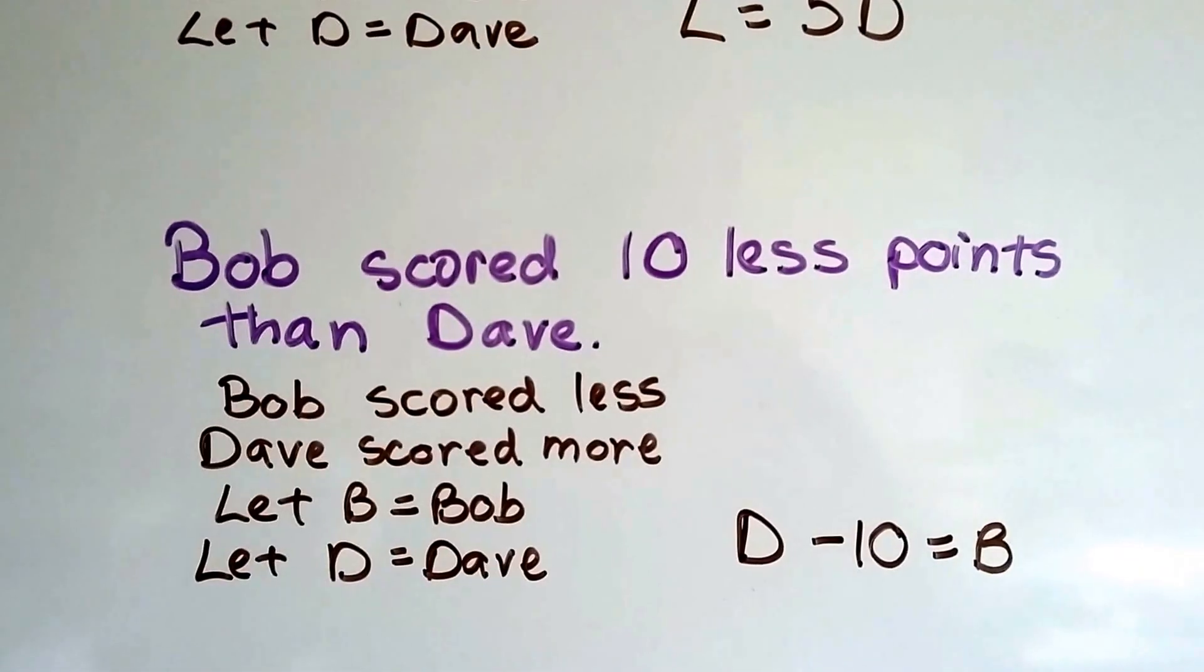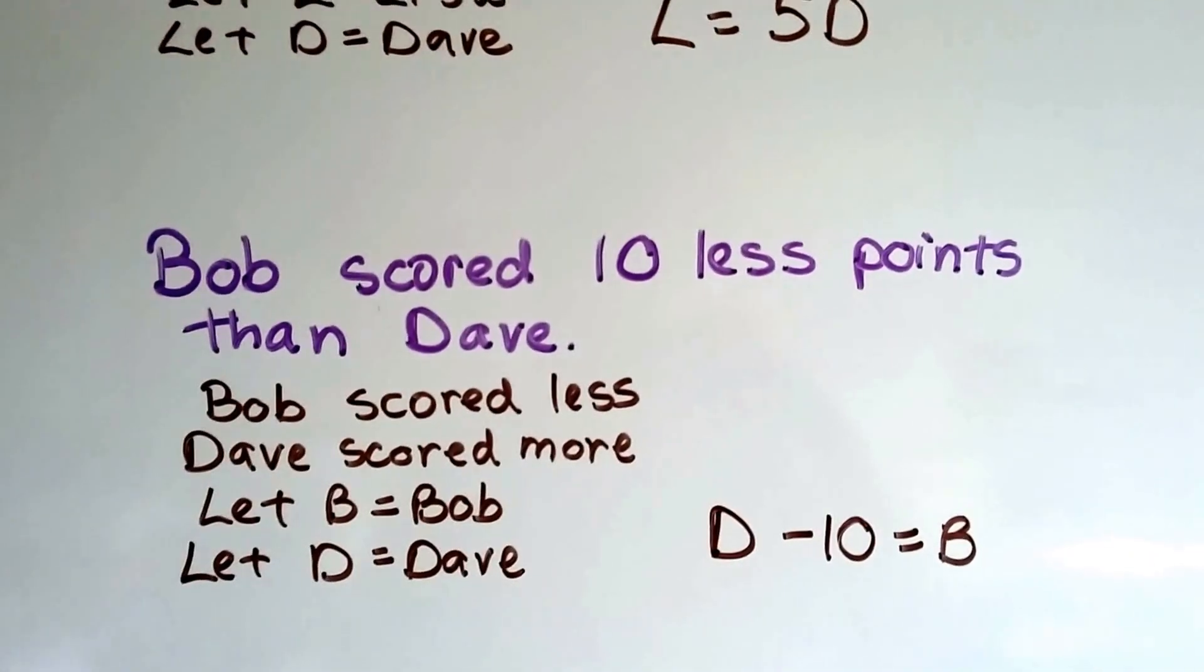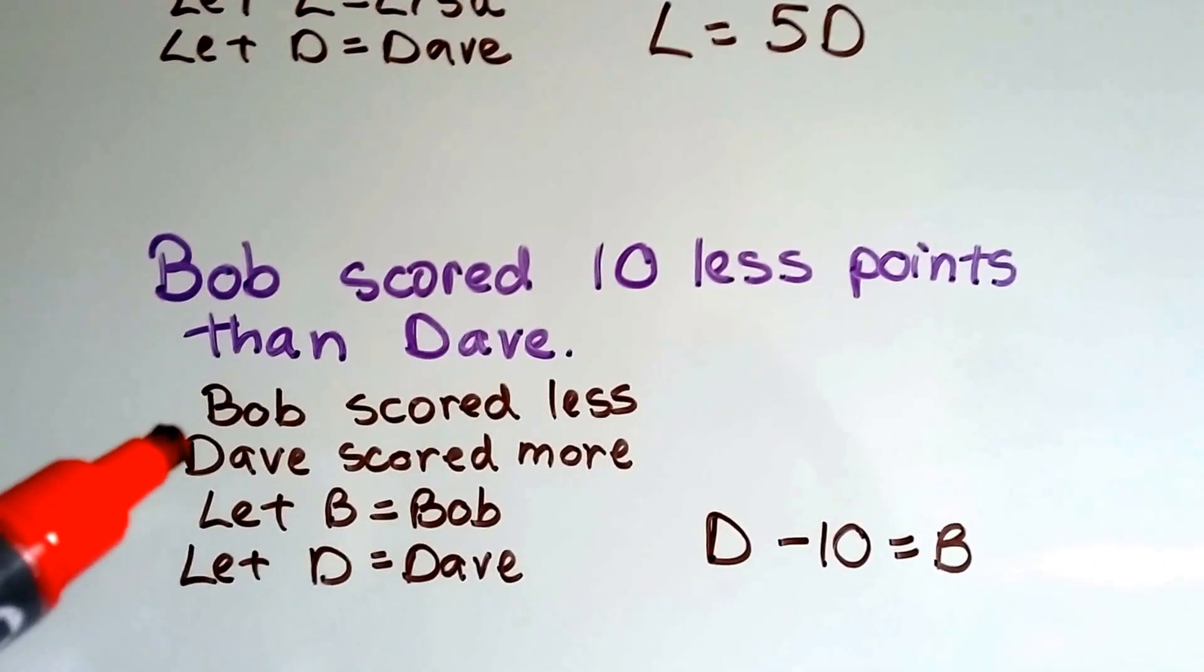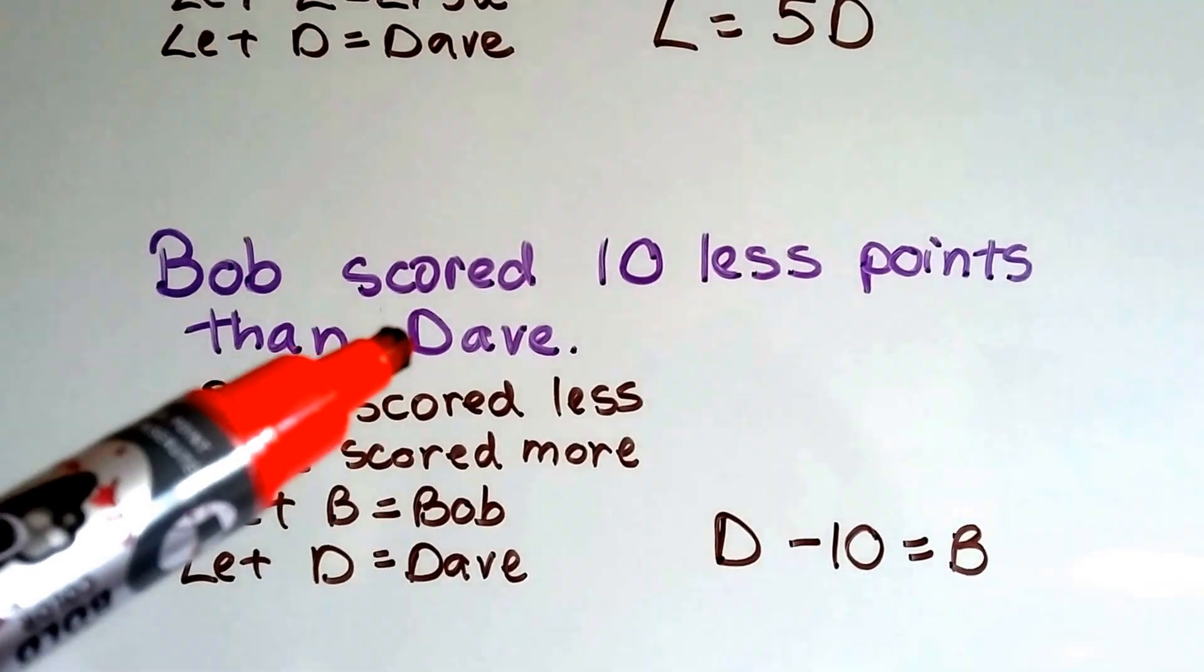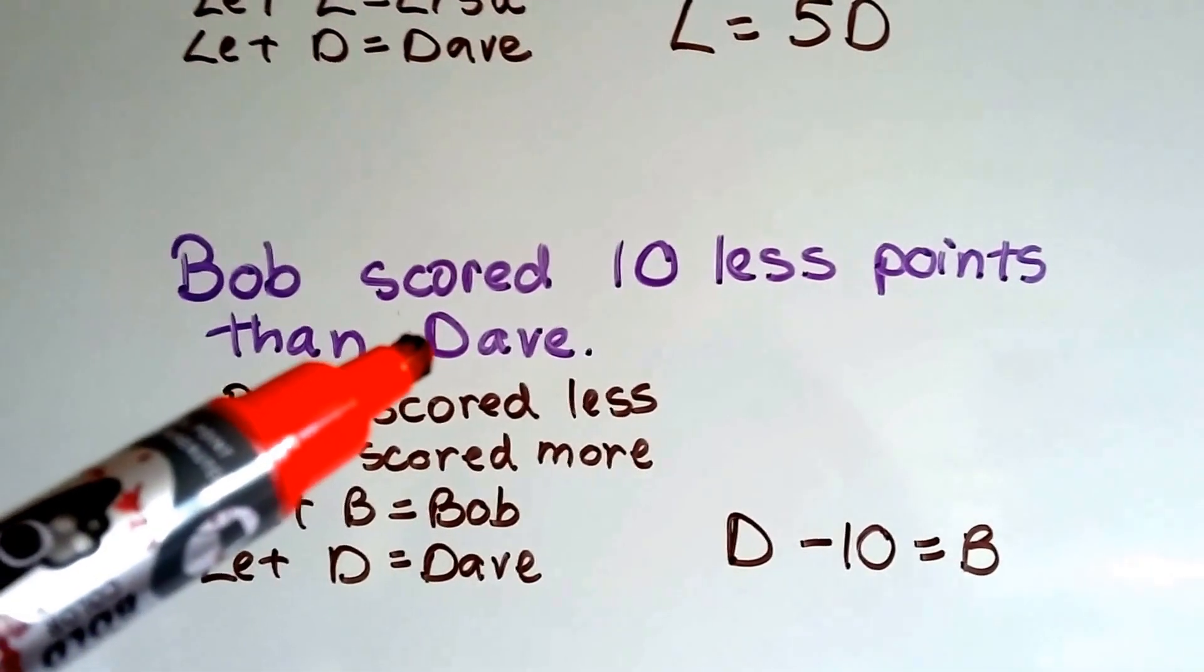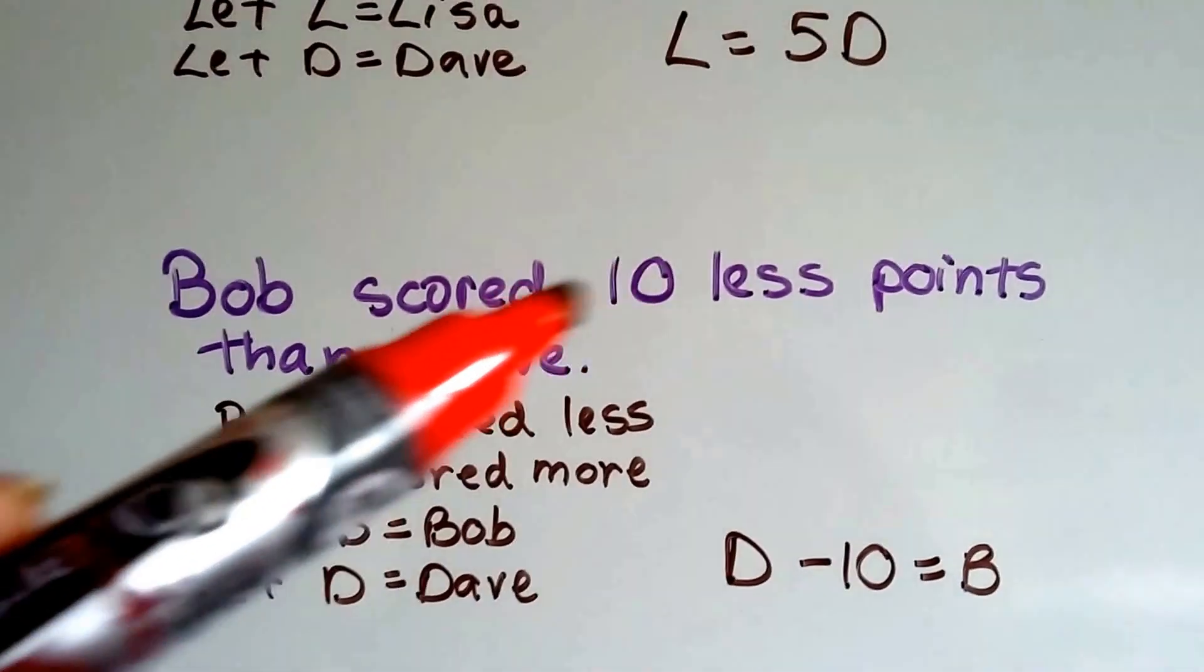Here's another one. Bob scored 10 less points than Dave. Alright, Bob scored less, which means Dave scored more, right? So let's say Dave scored 20 points. And Bob scored 10 less than that.